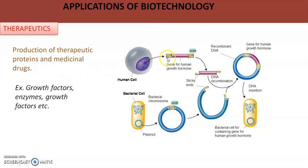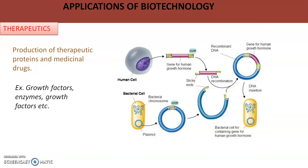From a normal person's cell, the gene for growth hormone is isolated and introduced into a plasmid obtained from a bacterial cell. After inserting the gene of interest into the vector, the recombinant DNA is introduced into competent host cells which take up the recombinant DNA. They are cultured and the desirable protein — the growth hormone — is harvested.